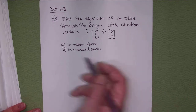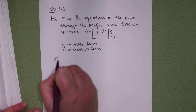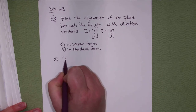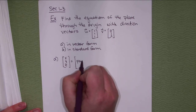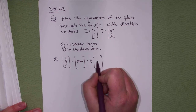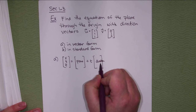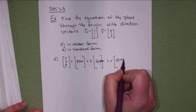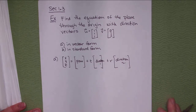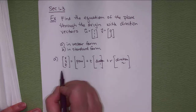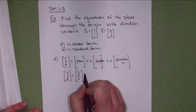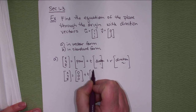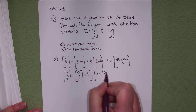Find the equation of the plane — remember just the vector form. This is easy if you're given two direction vectors, because vector form is XYZ equals a point plus s times direction one plus t times direction two. The point they gave us is the origin, which is zero, zero, zero. So in vector form we're essentially done by just plugging that in.